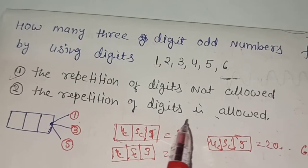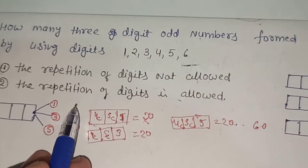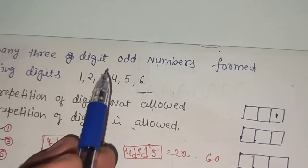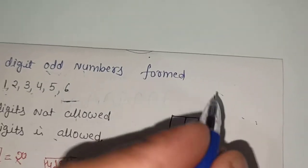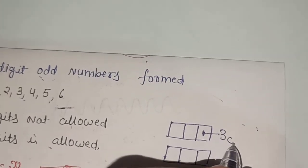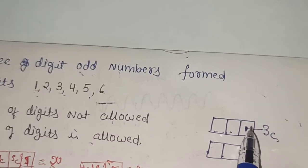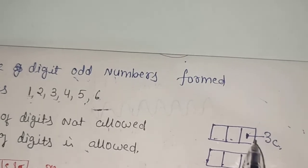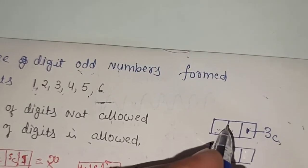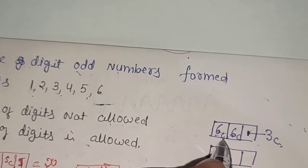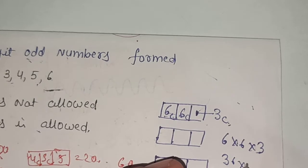Now we solve the case where repetition of digits is allowed. The condition is still that only odd numbers are possible, so the ones place has three choices: 1, 3, and 5. For the remaining two places — hundreds and tens — you can use all six digits, so there are six choices for each of those two positions.